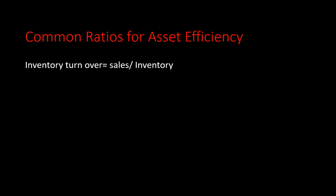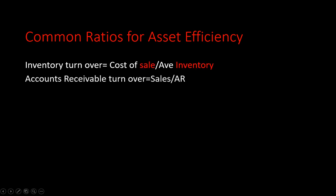A better formula is cost of sales divided by inventory, since both items are at cost. And since we are dividing a nominal account by a real account, we use the average of the real account — so the best formula is cost of sales divided by average inventory.